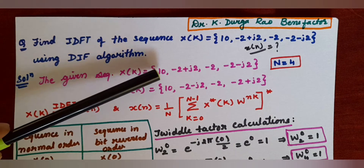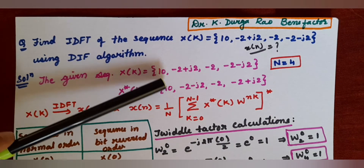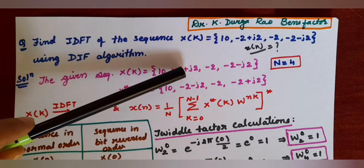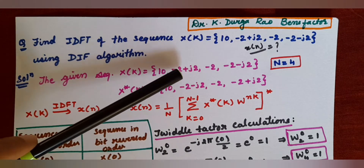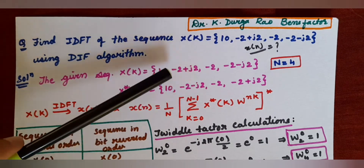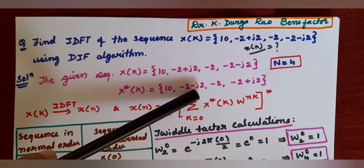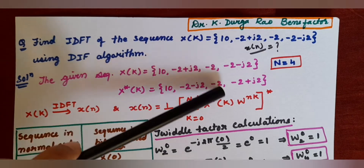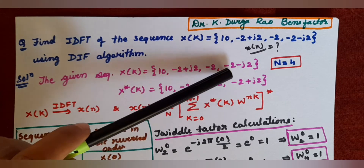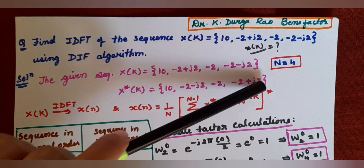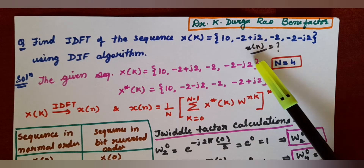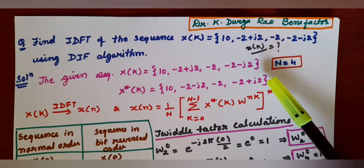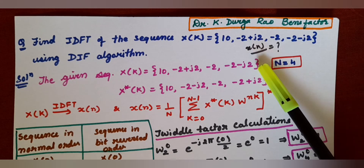10 is a real part, so 10 is written as it is. For finding the complex conjugate, where there is an imaginary part, change its sign. So, -2-j2: -2 is real, so -2 remains, and this becomes -2+j2. From the given sequence X(k) you can find x*(k), that is the complex conjugate of capital X(k).